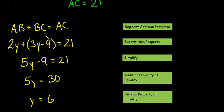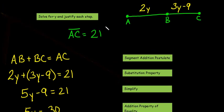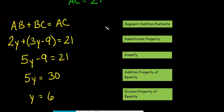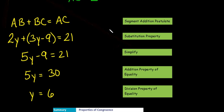So, AB plus BC equals AC. That's using the segment addition postulate. Talked about that last chapter. Here, 2y plus 3y minus 9 equals 21. That's the substitution property where we were told right up here what each segment equaled. 5y minus 9 equals 21. We simplify.